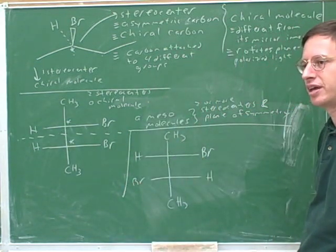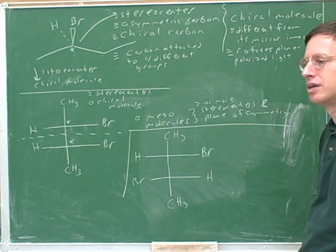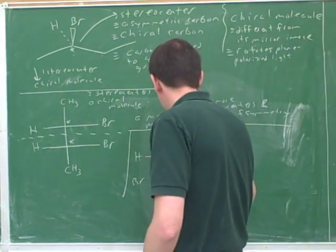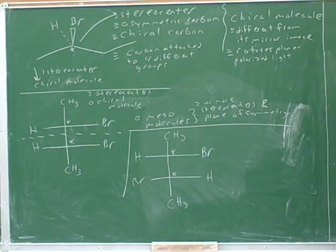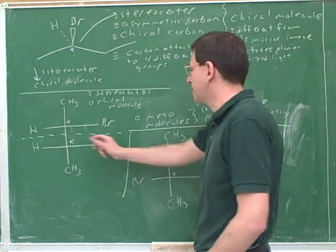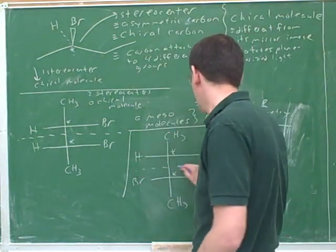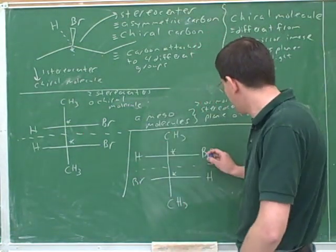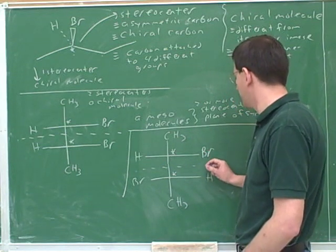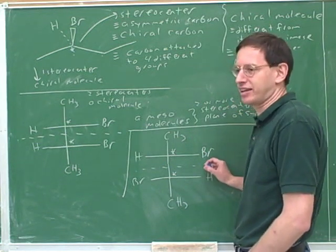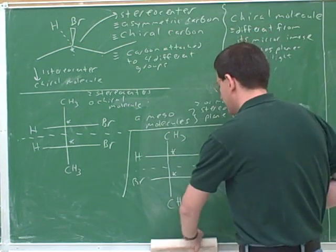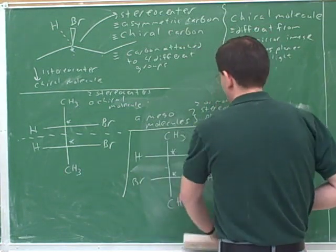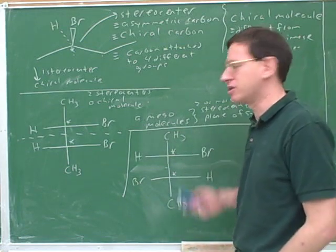Does this molecule have any stereocenters? It has two. Is this a chiral molecule? Yes. Does it have a plane of symmetry? No. This would not be a plane of symmetry because if the bromine looked in a mirror it would see another bromine, not a hydrogen — so this is not acting like a mirror. You have to check whether there are any other planes of symmetry too, but there are no other planes of symmetry.